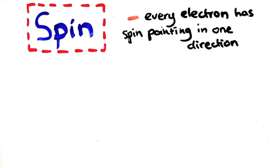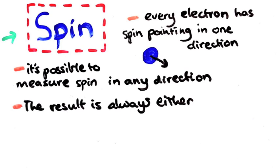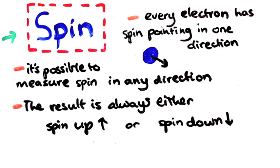First, remember that every electron has its spin pointing in one particular direction. However, it's also possible to measure the spin of an electron in any direction, and this is where it gets weird. Whatever direction you pick, there are only two possible values you can get, which we call spin up and spin down.